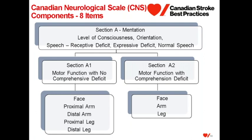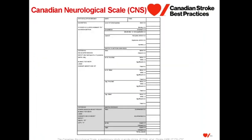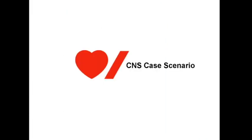I will walk through how we complete each of these components. We have included on this slide an example of the Canadian Neurological Scale documentation template. We will utilize this template to walk through how we would score the tool, and also at the end as we are scoring the case scenarios. To help us apply the CNS scoring, we will utilize a case scenario.